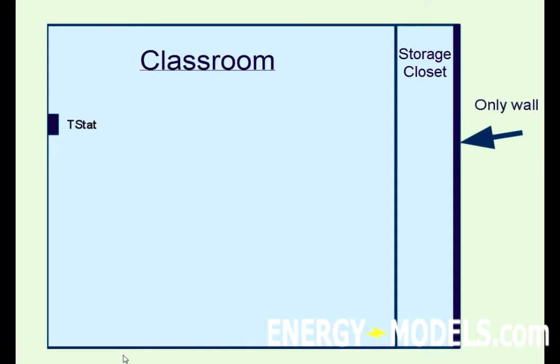So let's take a classroom with a storage closet for example. If there's a thermostat in the classroom and the storage closet has an exterior wall and it's the only wall, and both rooms have a 75 degree setpoint,